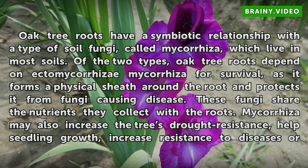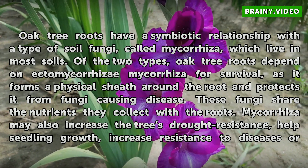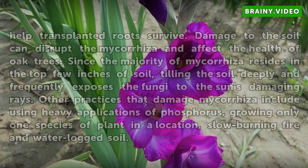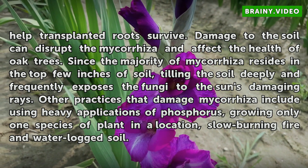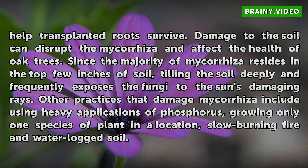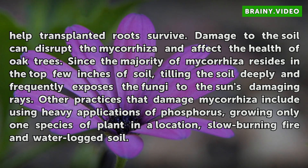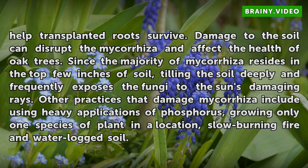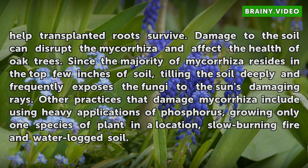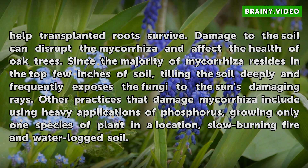Mycorrhiza may also increase the tree's drought resistance, help seedling growth, increase resistance to diseases, or help transplanted roots survive. Damage to the soil can disrupt the mycorrhiza and affect the health of oak trees. Since the majority of mycorrhiza resides in the top few inches of soil, tilling the soil deeply and frequently exposes the fungi to the sun's damaging rays. Other practices that damage mycorrhiza include using heavy applications of phosphorus, growing only one species of plant in a location, slow-burning fire, and waterlogged soil.